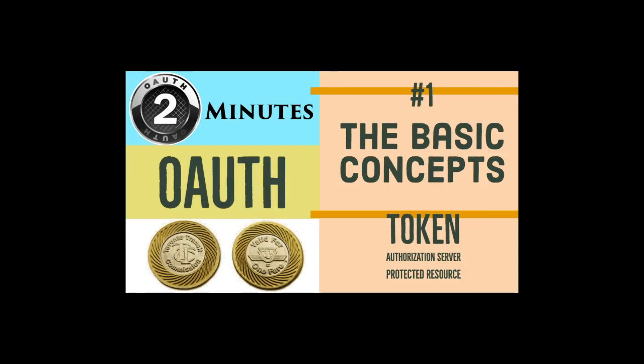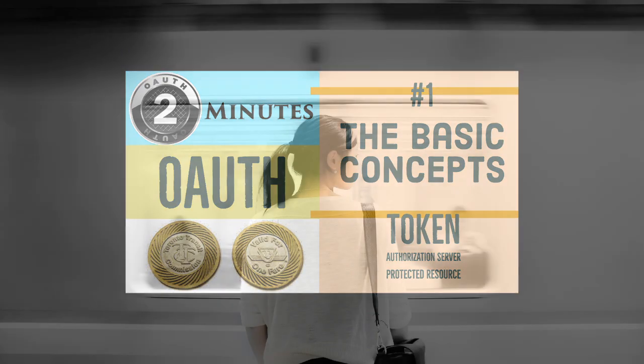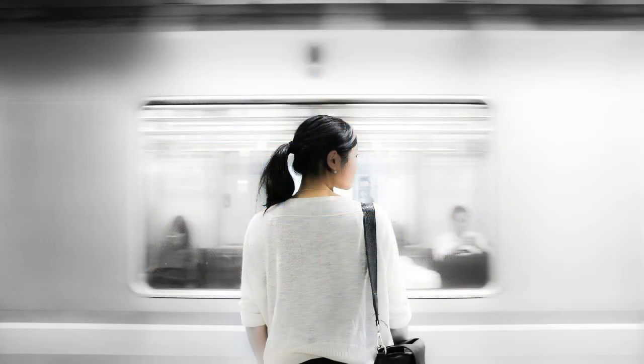A client is an entity that wants to access the protected resource. In the metro example that I introduced in episode 1, it's the passenger.